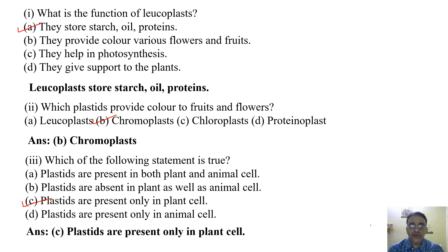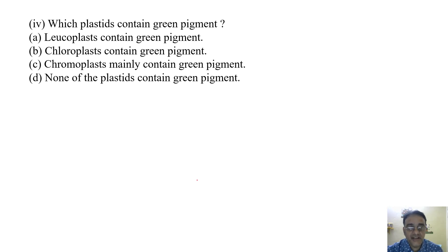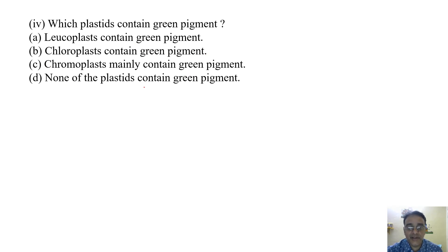The fourth question: Which plastids contain green pigment? The options are: leucoplasts contain green pigment; chloroplasts contain green pigment; chromoplasts mainly contain green pigment; or none of the plastids contain green pigment. As given in the context, the correct answer is B — chloroplasts contain green pigment.